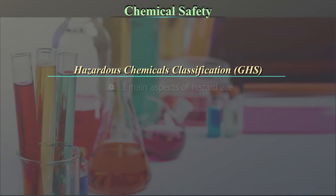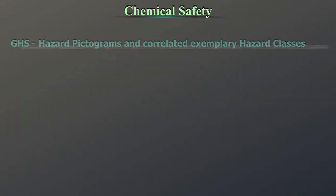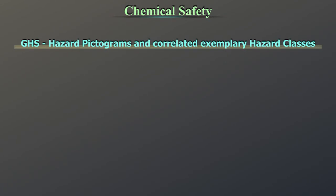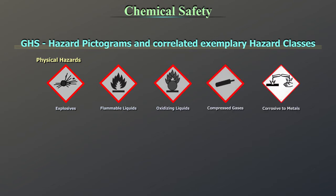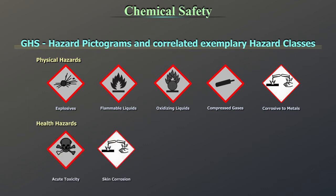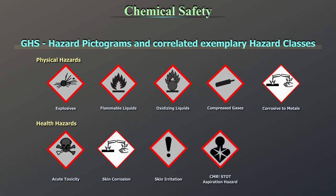Hazardous chemicals are classified under GHS. Three main aspects of hazard are identified: physical, health, and environmental. GHS hazard pictograms and correlated exemplary hazard classes include: Physical hazards — explosives, flammable liquids, oxidizing liquids, compressed gases, corrosive to metals; Health hazards — acute toxicity, skin corrosion, skin irritation, CMR or STOT, aspiration hazard; Environmental hazards — hazardous to the aquatic environment. CMR stands for Carcinogenic, Germ Cell Mutagenic, Toxic to Reproduction, and STOT stands for Specific Target Organ Toxicity.